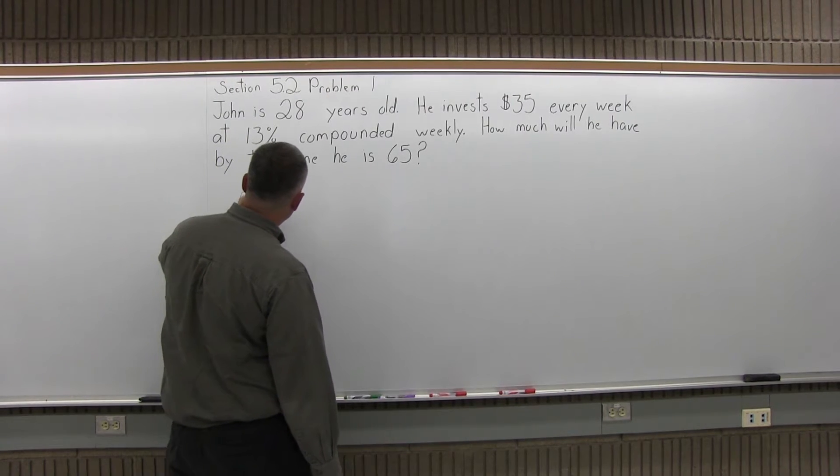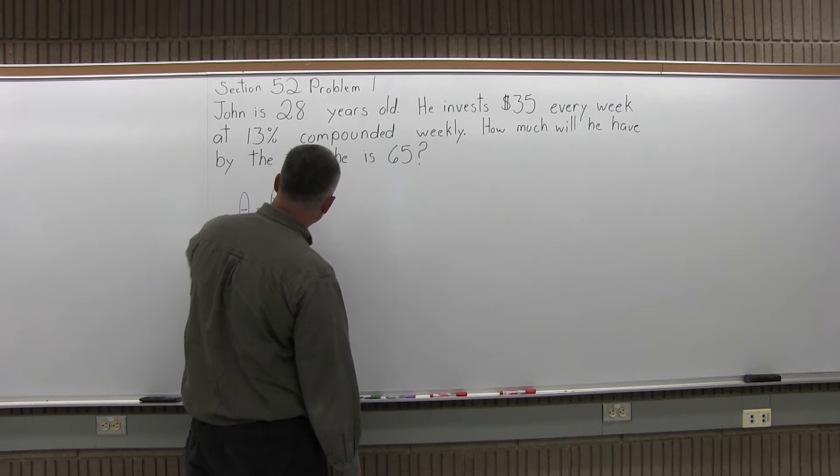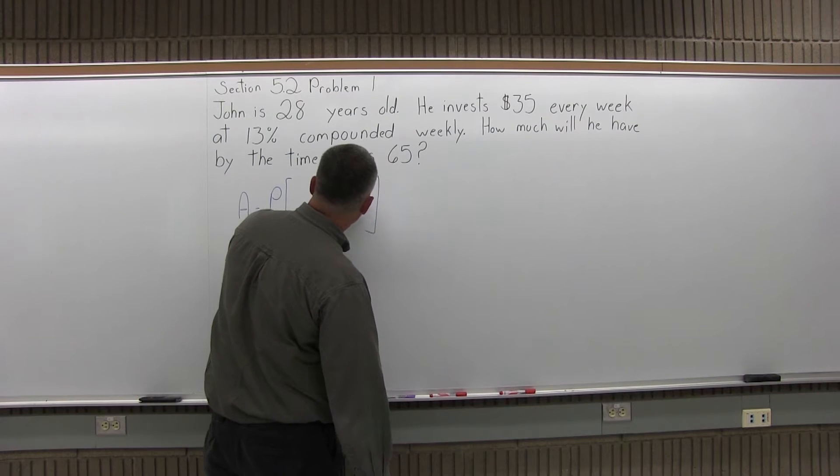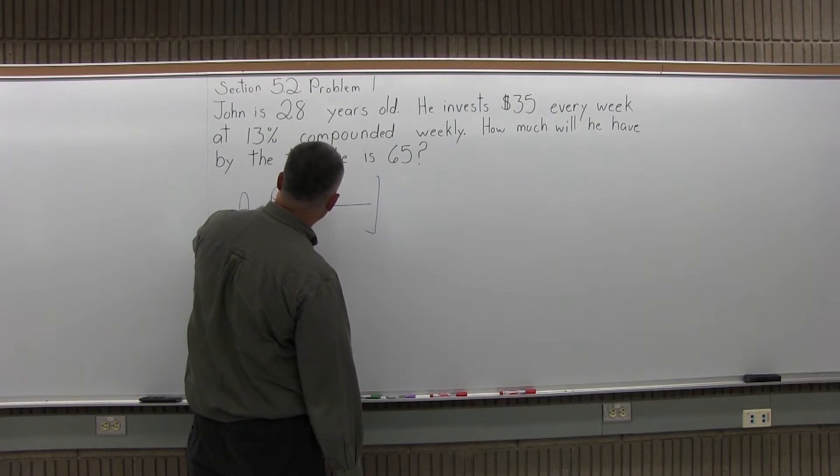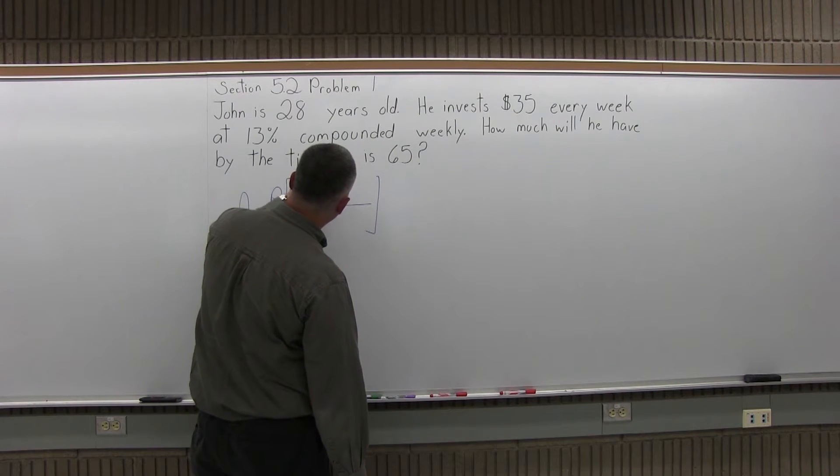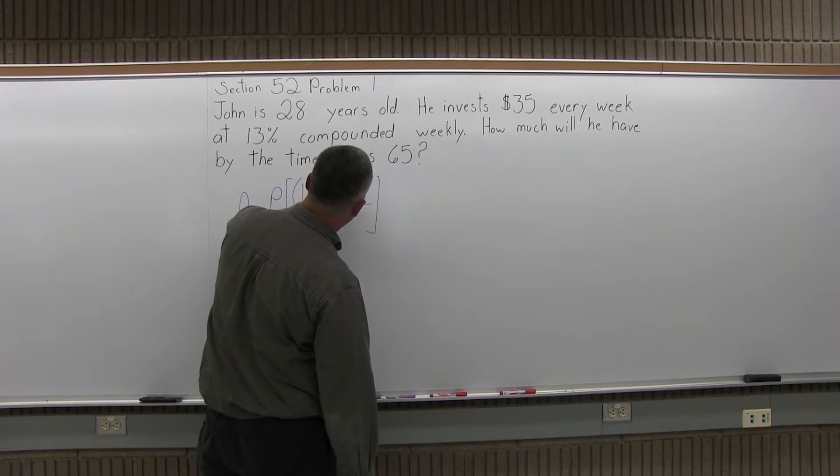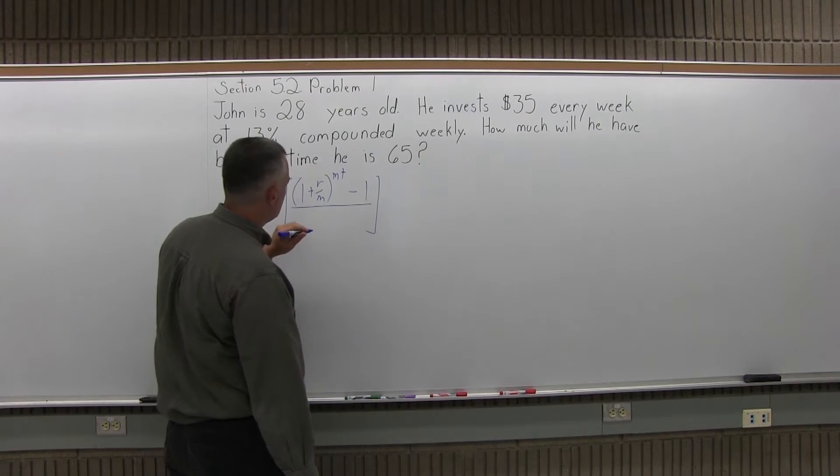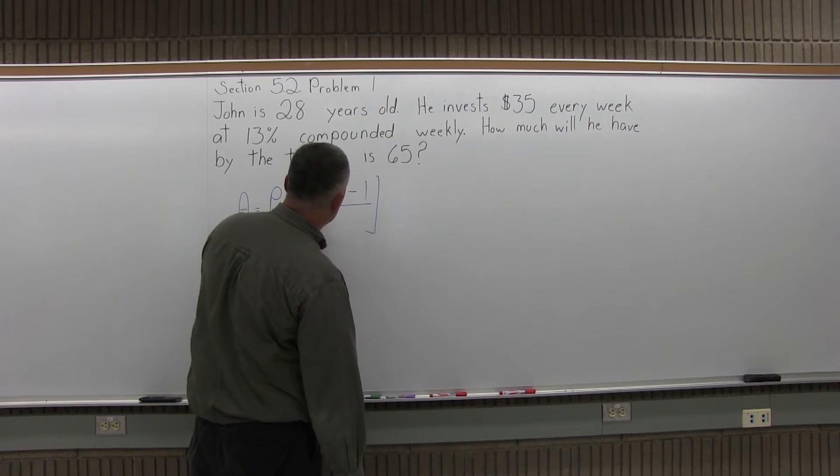So the formula is, A equals P times some brackets, and in the brackets you have 1 plus r over m to the m times t power, minus 1 in the numerator, and then in the denominator, r over m.